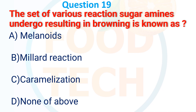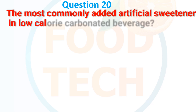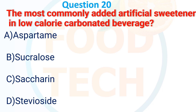Question 17: The set of various reactions sugars and amines undergo, resulting in browning, is known as — A. Melanoids, B. Maillard reaction, C. Caramelization, D. None of the above. The answer is B. Maillard reaction. Question 18: The most commonly used artificial sweetener in low-calorie carbonated beverages — A. Aspartame, B. Sucralose, C. Saccharine, D. Stevia. The answer is A. Aspartame.